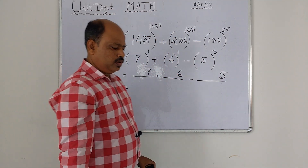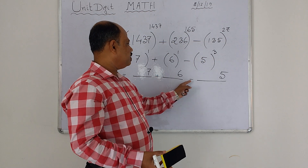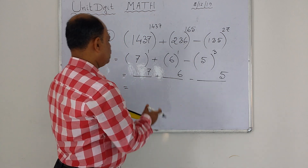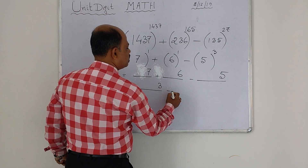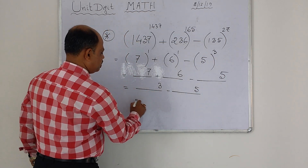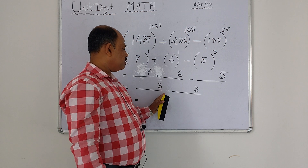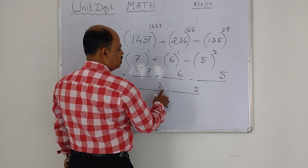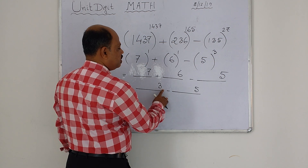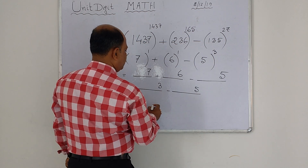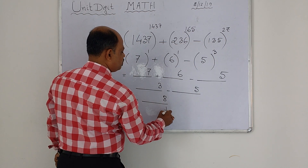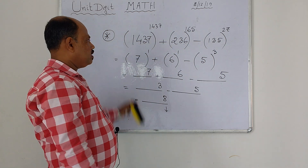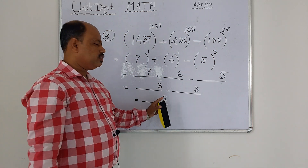Then in BODMAS: 7 plus 6 minus 5. That is 13 minus 5. But in the case of subtraction, borrowing — 3, you have to think that is 13. 13 minus 5 is 8. Therefore, after calculation of the expression, the answer is 8 in the unit place.